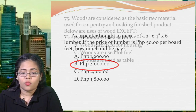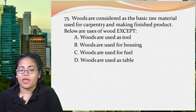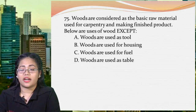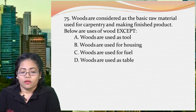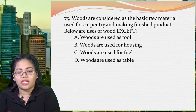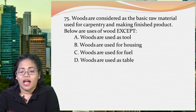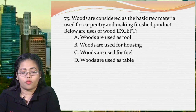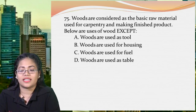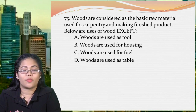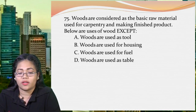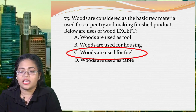Next: woods are considered the basic raw material for carpentry. Below are uses of wood, except: A: woods are used as tools, B: woods are used for housing, C: woods are used for fuel, or D: woods are used as tables. Wood is used as tools like wooden mallet and float; for housing like roofs, walls, and stairs; and for tables — a common finished wood product. Wood is also used for fuel such as charcoal, but since the question asks about carpentry use, the answer is letter C: woods are used for fuel.